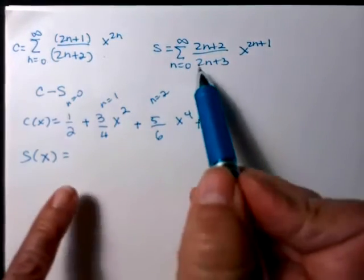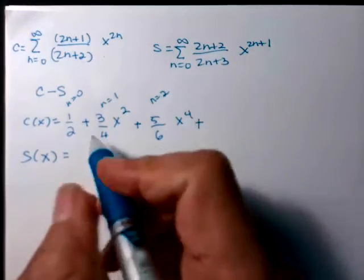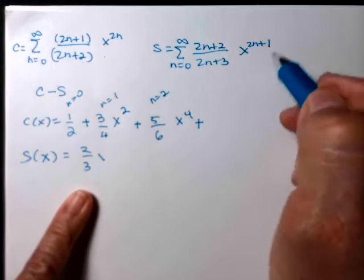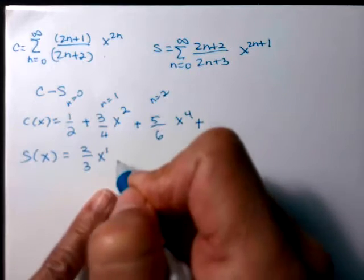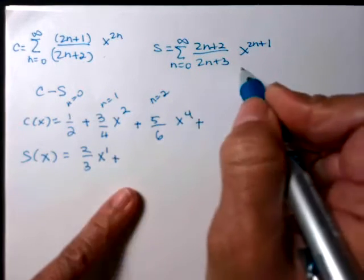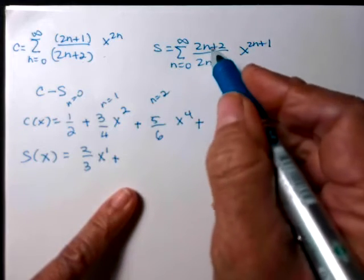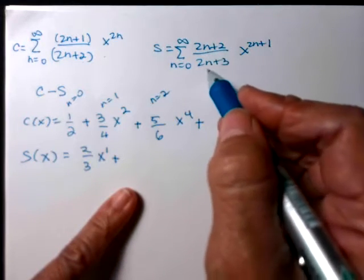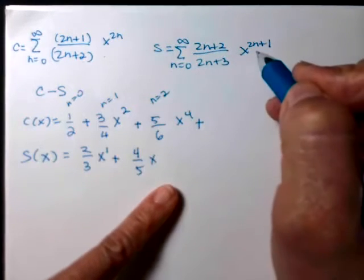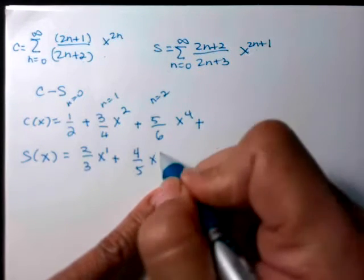And then let's write some S's. So I'll just write 2 for this. So if N is 0 for S, I'm going to get 2 thirds. Let's see, S is 0, so that's x to the 1st. Okay, good. N is 1. Again, no alternating, so everybody's plus. So that'll be 1, that'll be 4 fifths. N is 1, x to the 3rd.